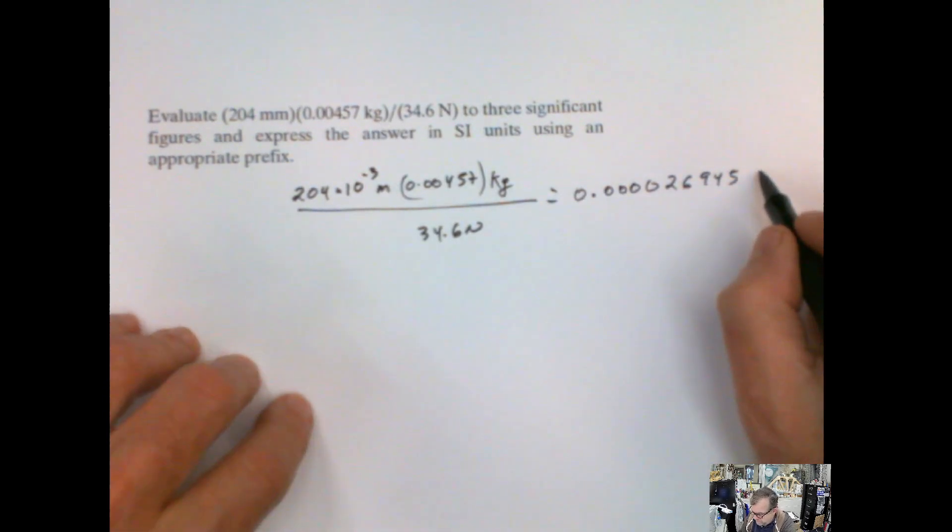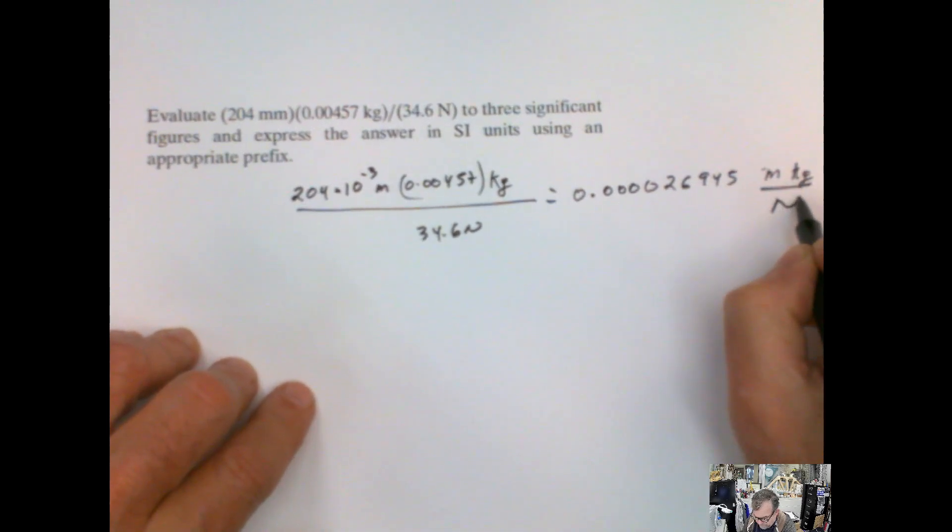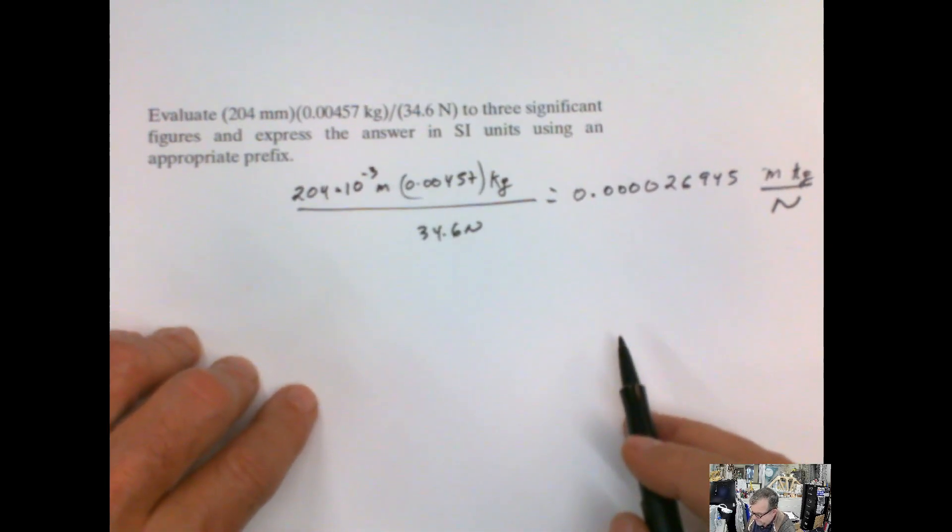These units are meter, kilogram, divided by newton. OK, meter, kilogram divided by newton.